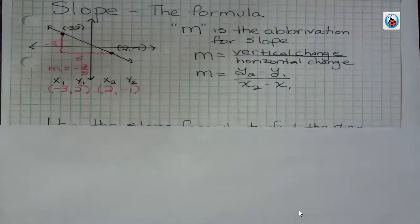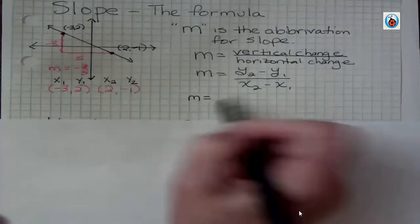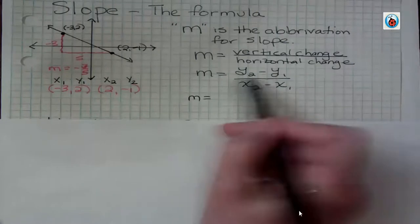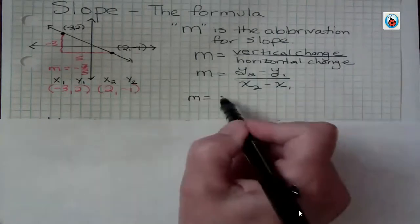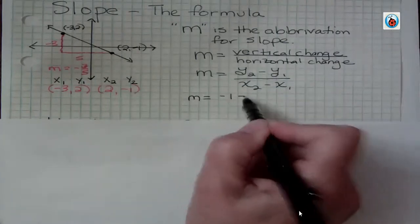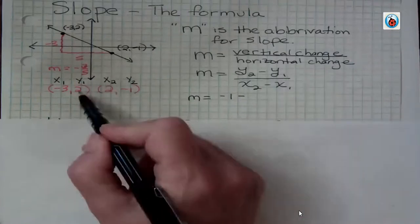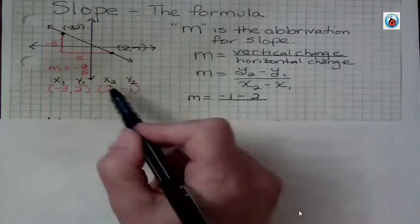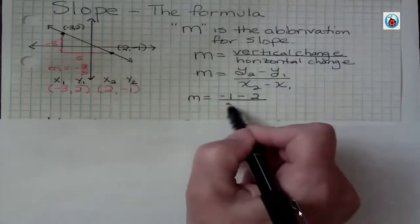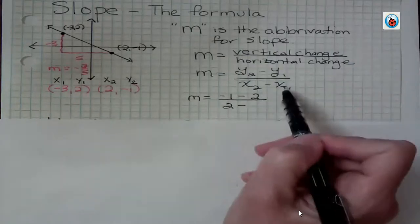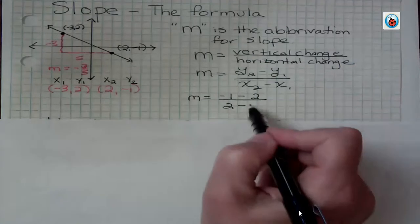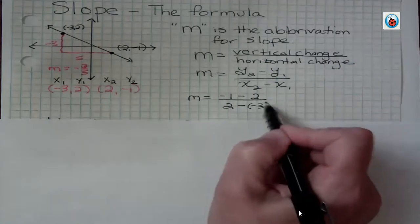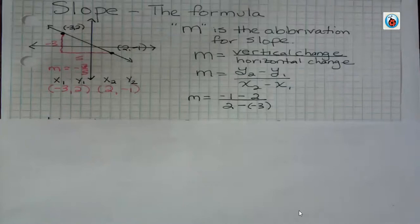So if I want to use this formula, I just plug in my y sub two was negative one, so I put in the negative one. It's a subtraction, so I put that in. My y sub one, well that was two. And then I go and I say my x sub two was two minus, because that's in the formula, my x sub one, which is negative three. Notice that I'm subtracting a negative three. I don't just put minus three. I know it's basic, but remember that's a really common mistake for people to plug in the negative incorrectly.